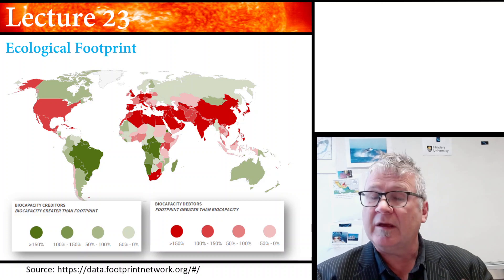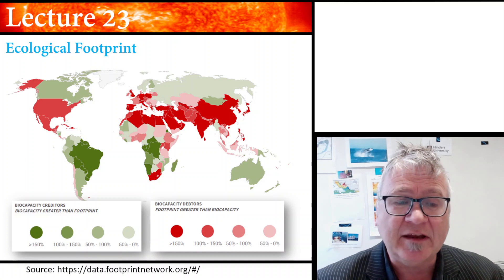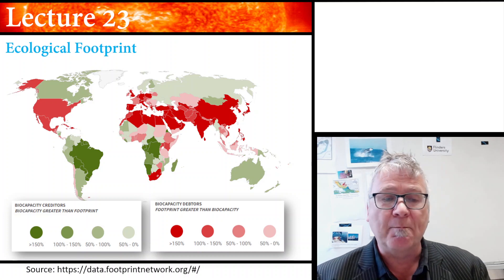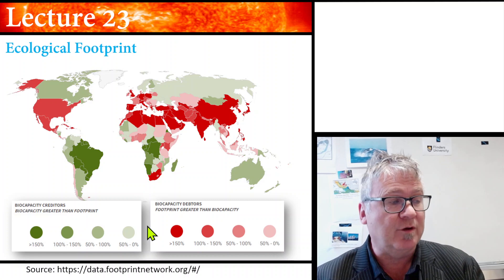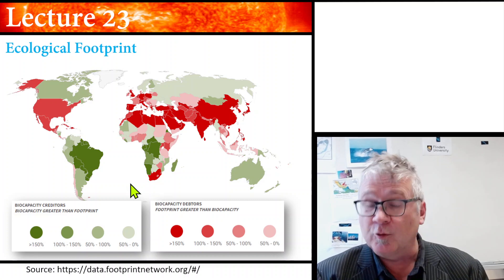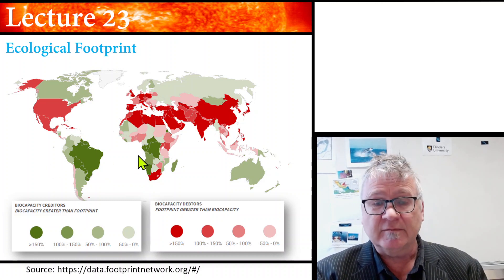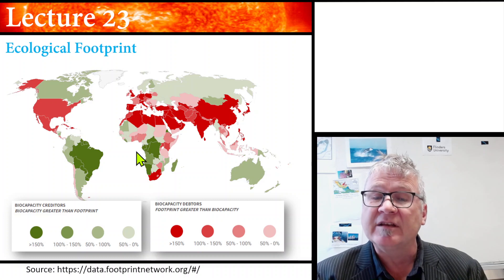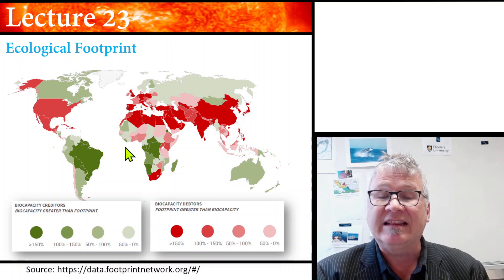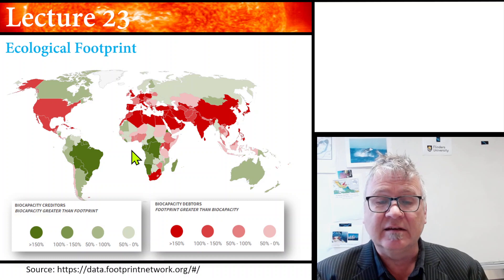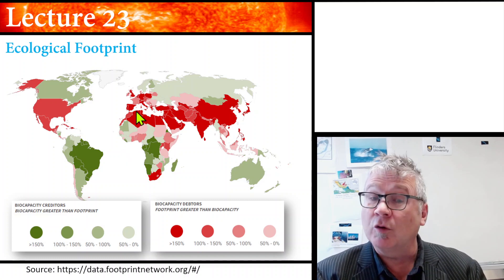We can create some maps where we have regions where the biocapacity is greater than the footprint, shown in green, and we have areas where the biocapacity is less than the footprint, shown in red.